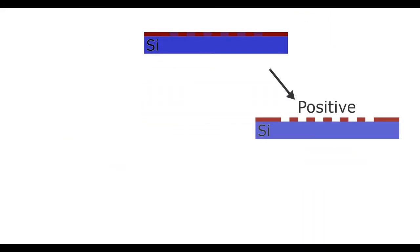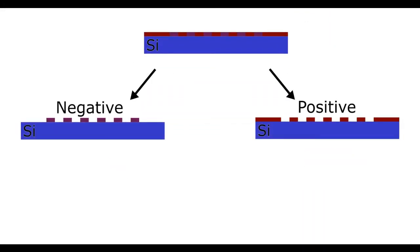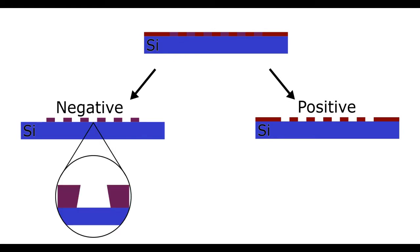Positive and negative resists create opposite sidewall profiles. Negative resists leave an overhang over the substrate. When material is deposited onto the substrate, the overhang leaves a gap between the resist and the deposited material. This makes it possible for a solvent to penetrate under the photoresist, dissolving it and lifting off material that isn't part of the pattern.